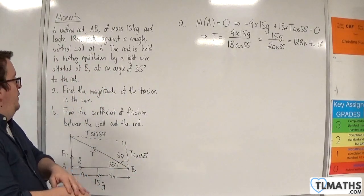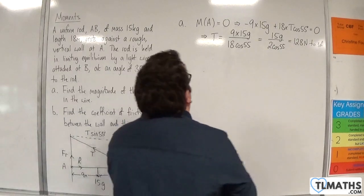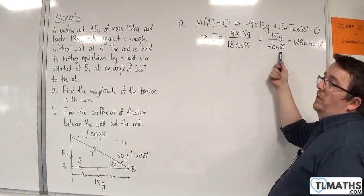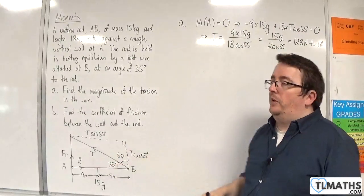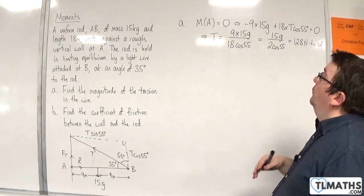The answer is 15g over 2 cosine 55. Now, if you've done it in a slightly alternative way, all you would have here is 15g over 2 sine 35. If you split the T force up into a slightly different way.